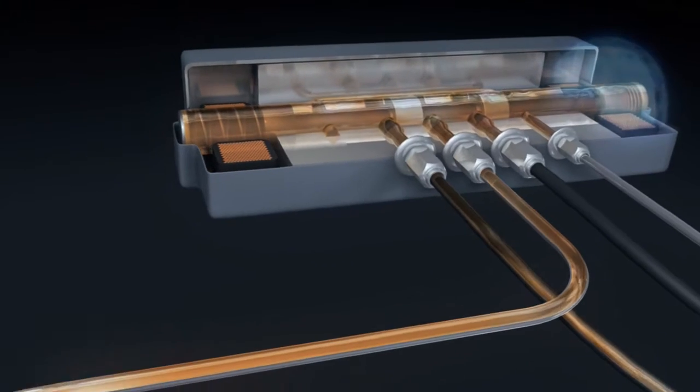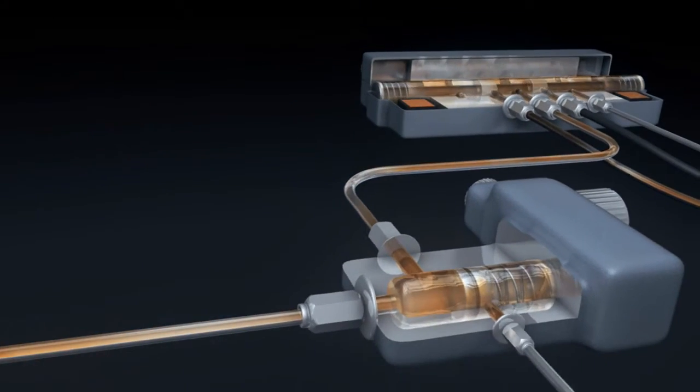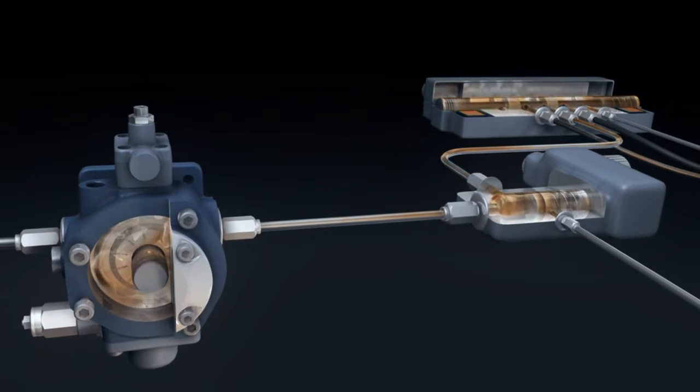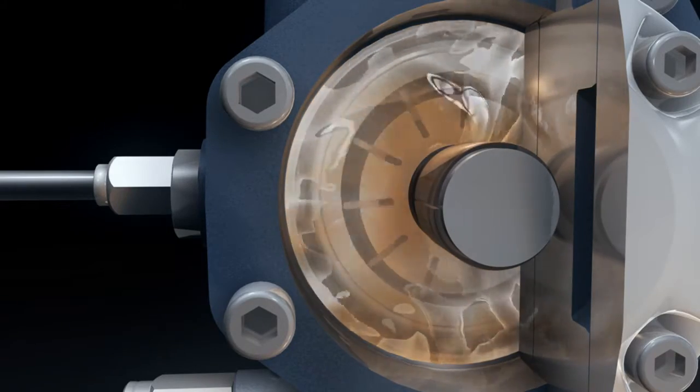To demonstrate its hydraulic efficiency, Mobil DTE 10 Excel was tested in a typical vane pump against ExxonMobil's standard hydraulic oils under controlled conditions over a 30-minute period.